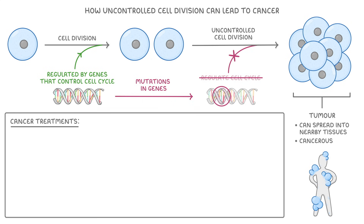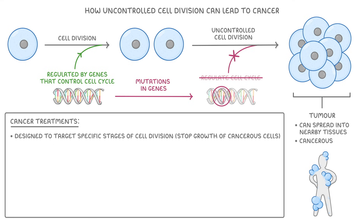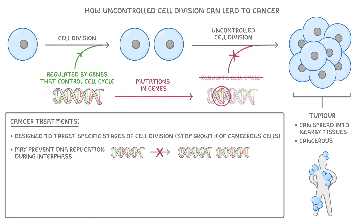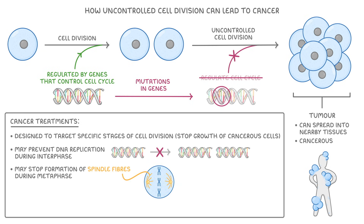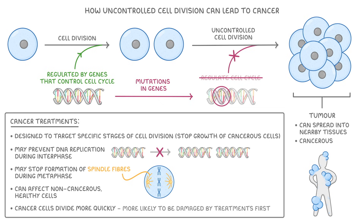Because of this, cancer treatments are usually designed to target specific stages of cell division in order to stop the growth of cancerous cells. For instance, some treatments may prevent DNA replication during interphase, whilst others may stop the formation of spindle fibers during metaphase. These treatments can affect healthy non-cancerous cells too, but because cancer cells divide more quickly they're more likely to be damaged by these treatments first.